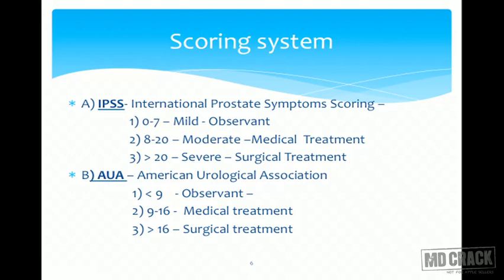For the mild variant we can be just observant — it is called watchful waiting. The second zone, with a score of 8 to 20, is the moderate zone, which warrants some form of drug treatment — pharmacological or medical treatment, which we call conservative treatment. Lastly, a score of more than 20 requires surgical intervention, either endoscopic or open surgery.